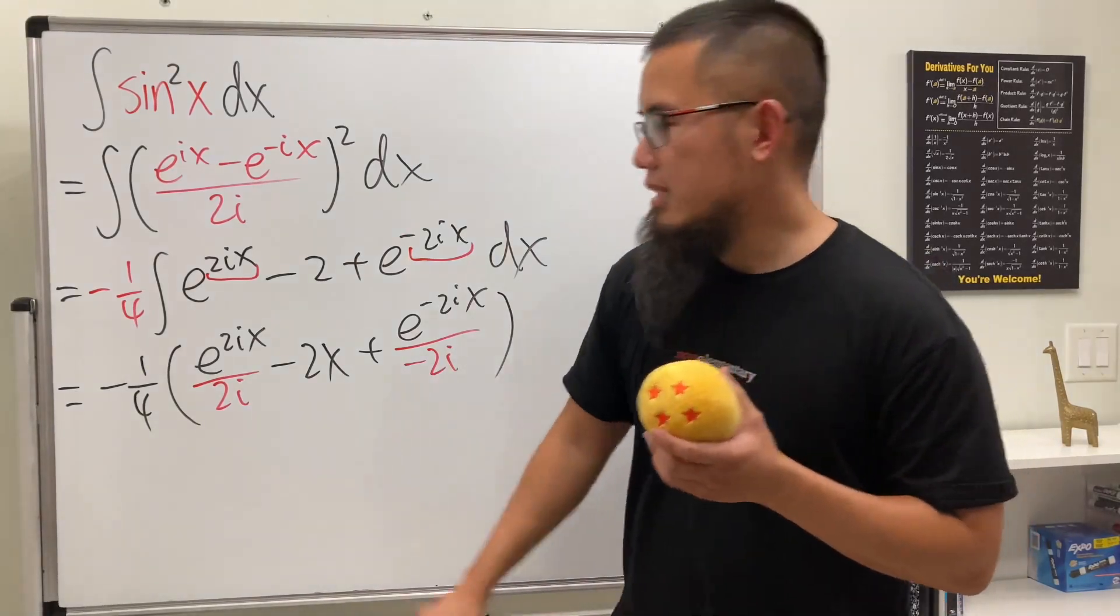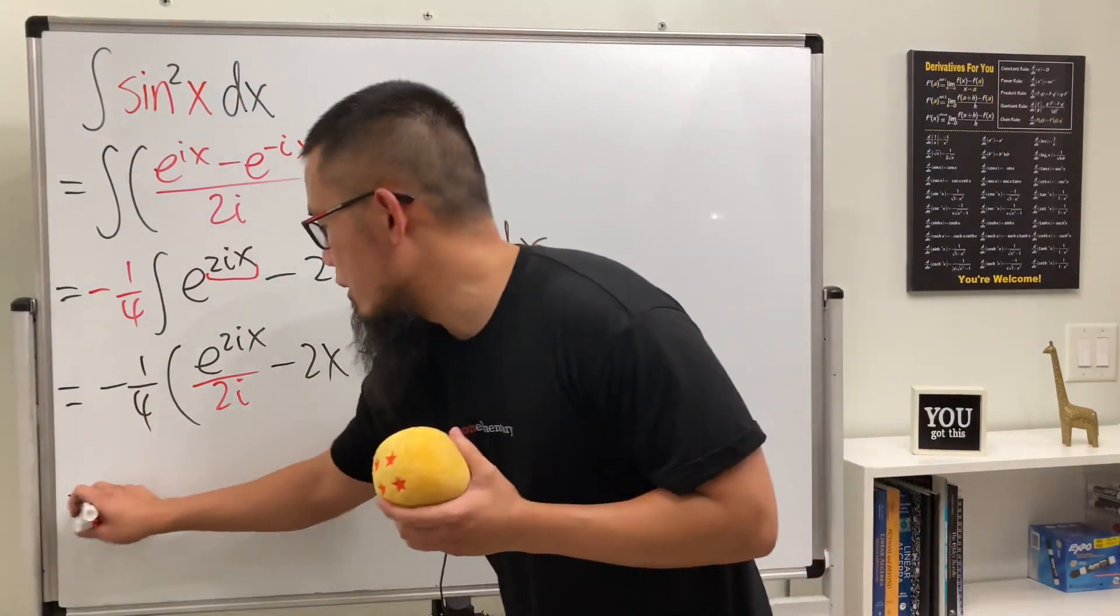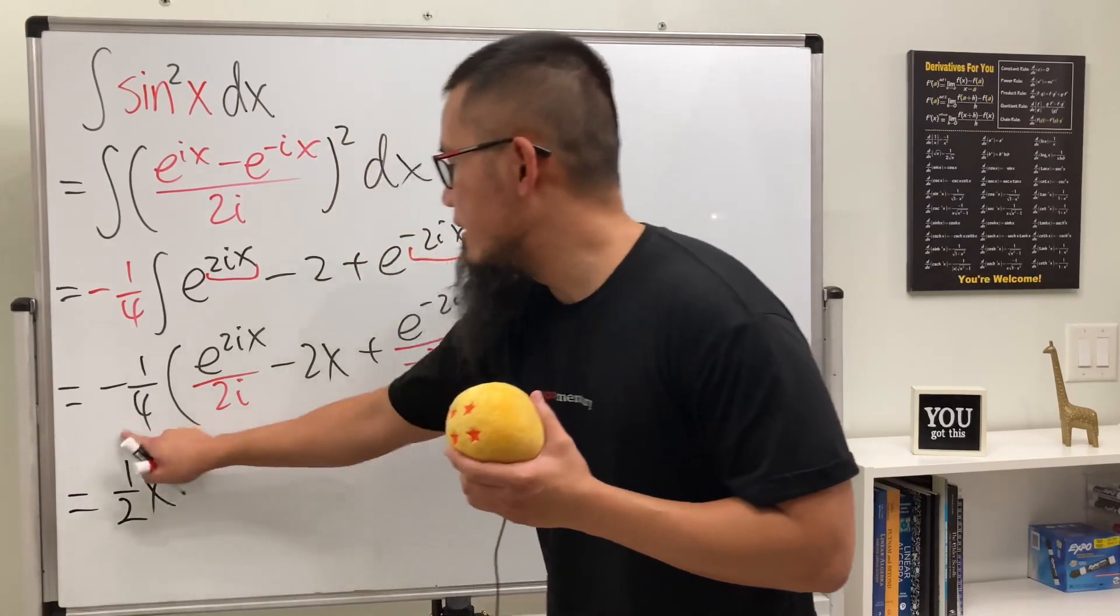Next, check this out. I'm going to do this middle term first, which is going to be 1 over 2x, and then this times the rest.